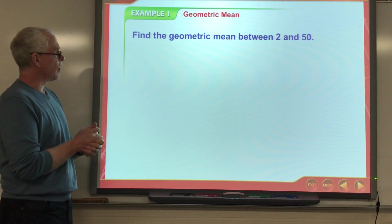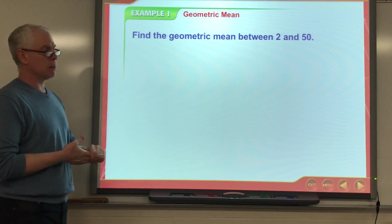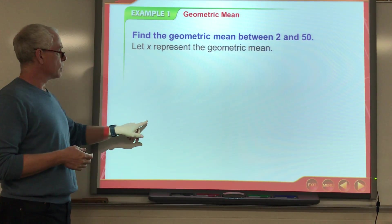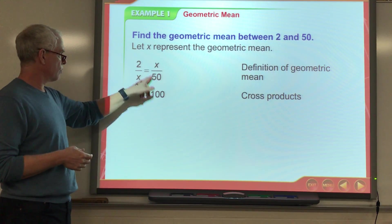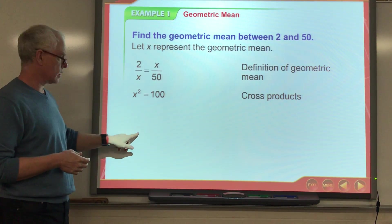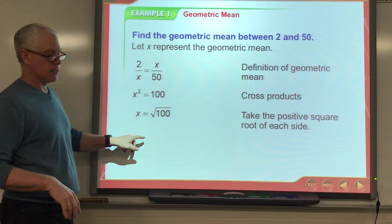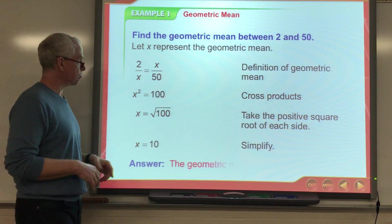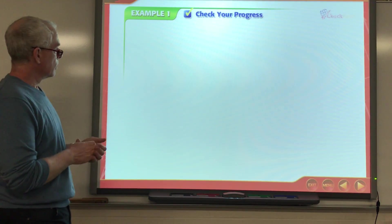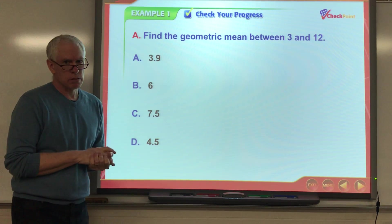So to work this out, find the geometric mean between 2 and 50. Well, we need to go ahead and multiply 2 and 50, get 100, and then we're going to take the square root of that, which of course is 10. All right, so pause the video, give this a shot.